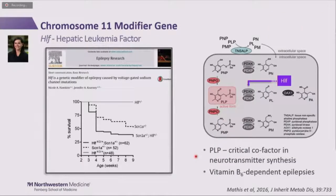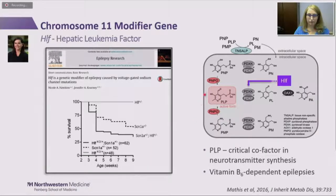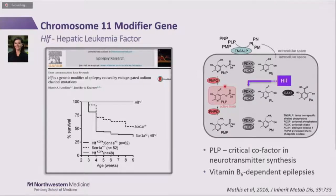We don't always find things as obvious as the GABA-A receptor subunit. Hepatic leukemia factor (HLF) is another modifier gene we found on a different chromosome. When you combine the SCN1A mutation with heterozygous deletion of HLF, you exacerbate the survival phenotype. Despite its name, HLF is actually a transcription factor important for regulating expression of PDXK, a critical rate-limiting enzyme in the vitamin B6 pathway. The active form of vitamin B6, PLP, is a critical cofactor for neurotransmitter synthesis, and there are vitamin B6-dependent epilepsies with mutations in different aspects of this pathway, suggesting any disruption could exacerbate Dravet syndrome phenotypes.